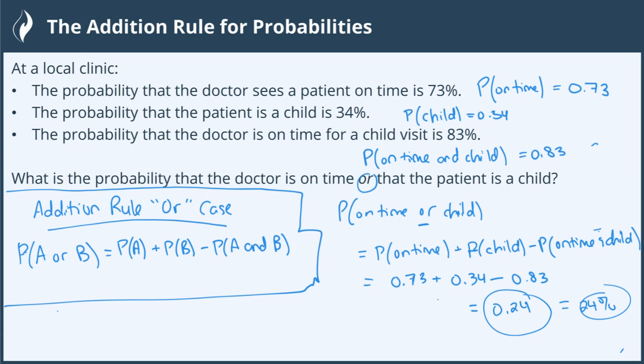So just recapping, whenever you hear the or case, you automatically are doing the addition rule. And you have the probability of something or something, in this case, on time or child. So you always take the probability of the first, add the probability of the second and subtract the probability of the intersection if there is one. And you have your addition rule.